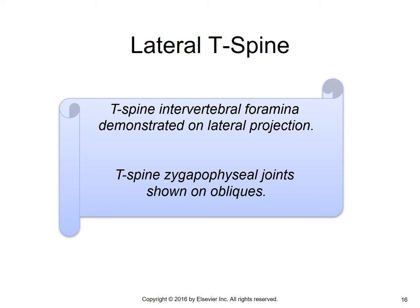Table 8-1 lists the three areas of the spine — cervical, thoracic, and lumbar — and then lists intervertebral foraminae and zygapophyseal joints. We already learned the lumbar spine, where the intervertebral foraminae are demonstrated on the lateral projection. The thoracic spine likewise demonstrates the intervertebral foraminae on the lateral. So for both the T-spine and the lumbar, the intervertebral foraminae are demonstrated on the lateral projections.